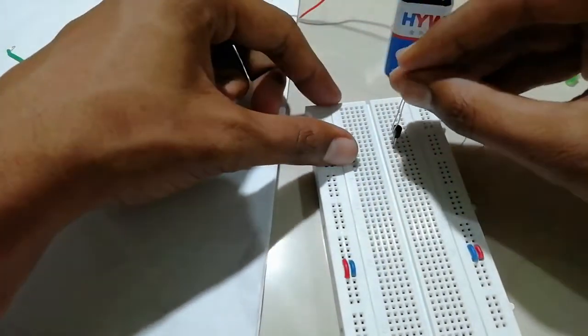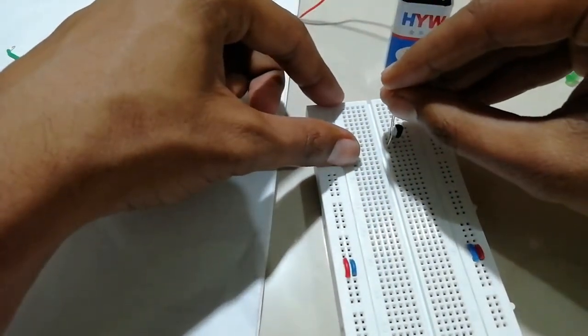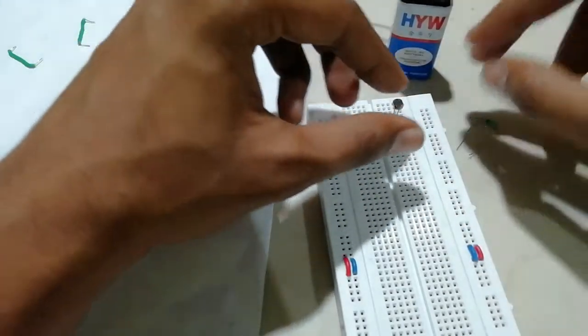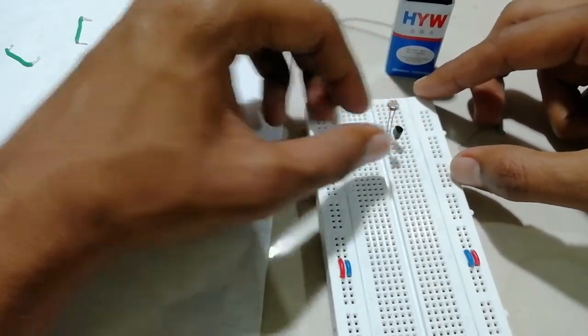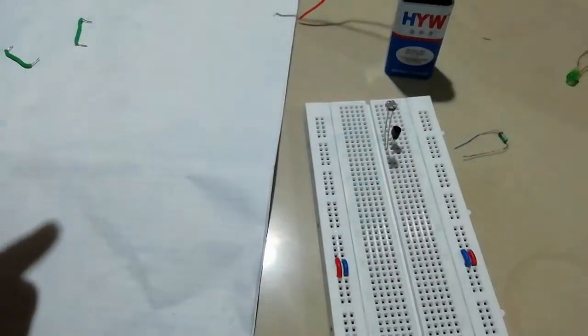So connecting from base to emitter. Since LDR doesn't have polarity, we can connect it either way.